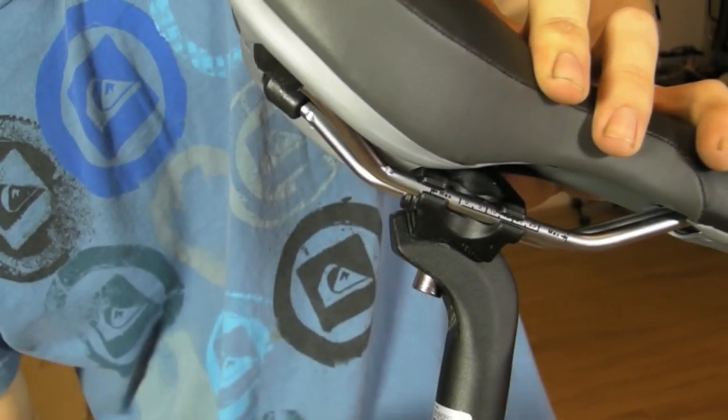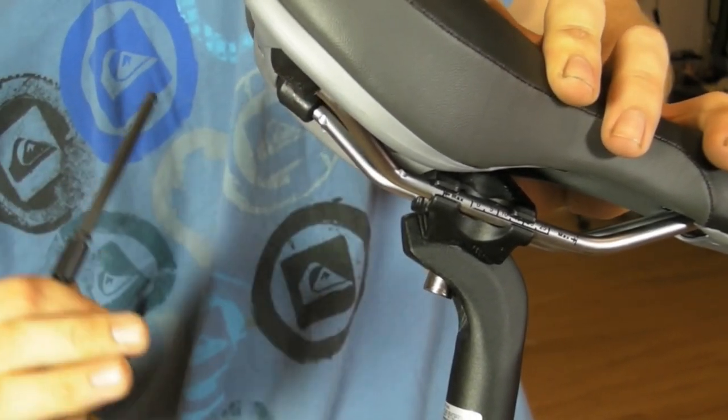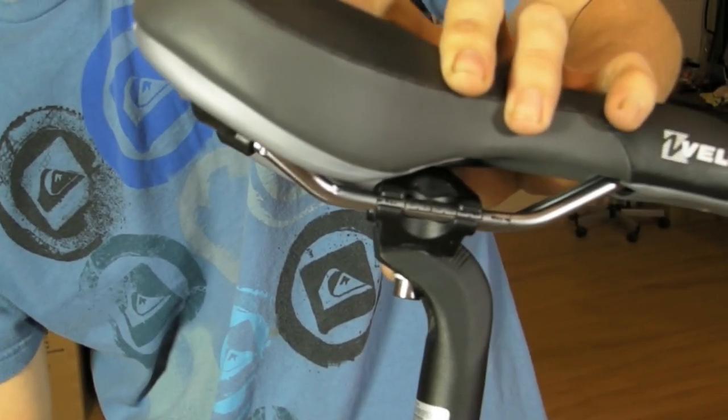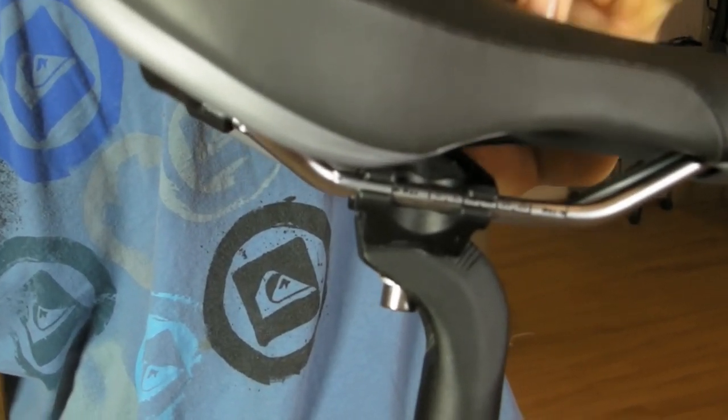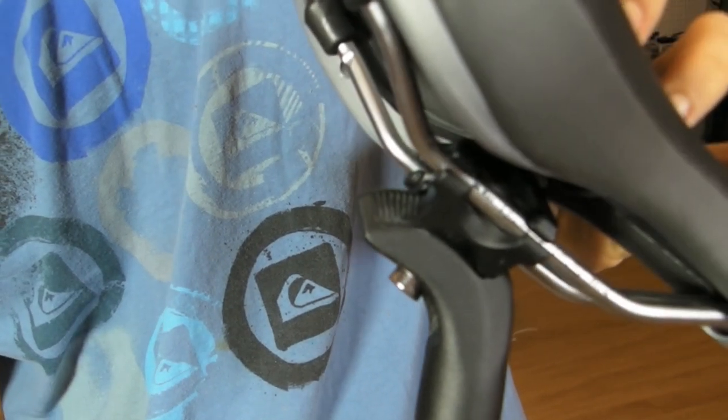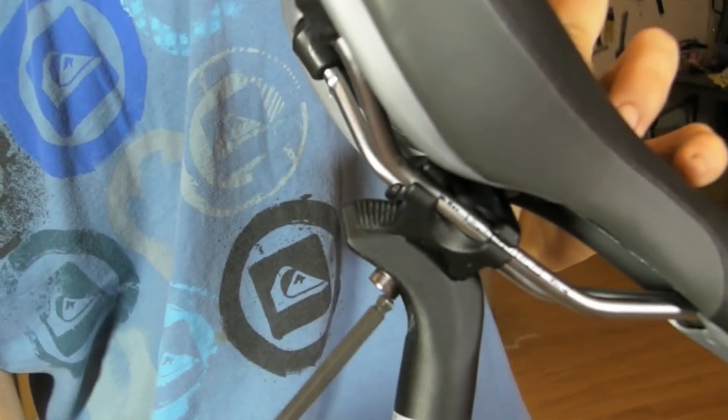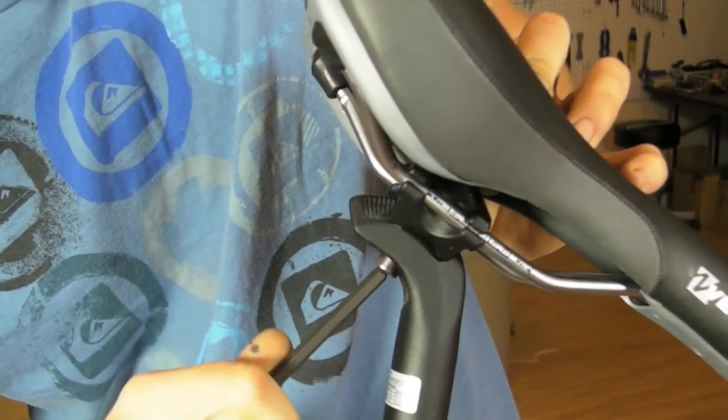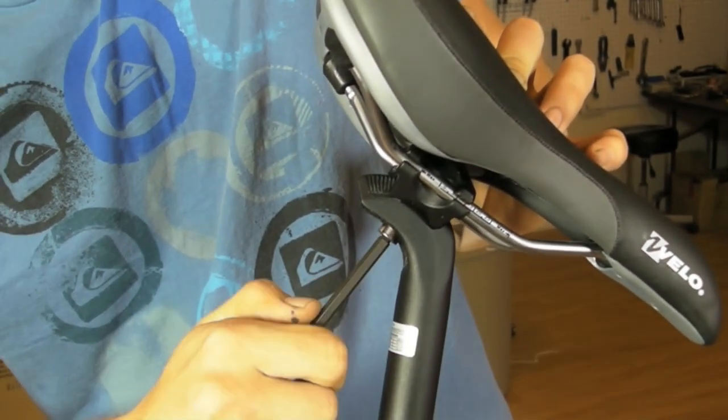This seat post actually has a degree adjustment in it, meaning you can pitch the seat forward or backwards. So this is the seat pitched all the way back, and this is the seat pitched all the way forward. And you can tighten it down to whatever accommodates you, your body style, your geometry, whatever feels most comfortable.